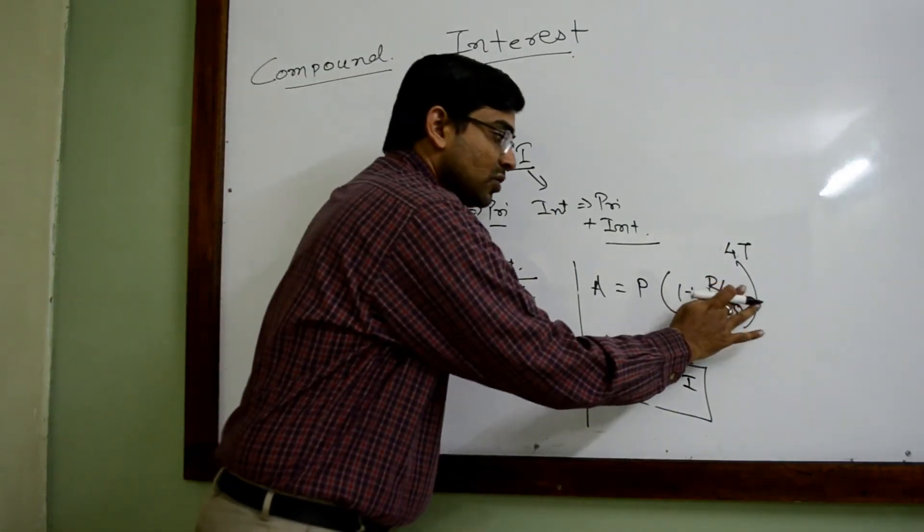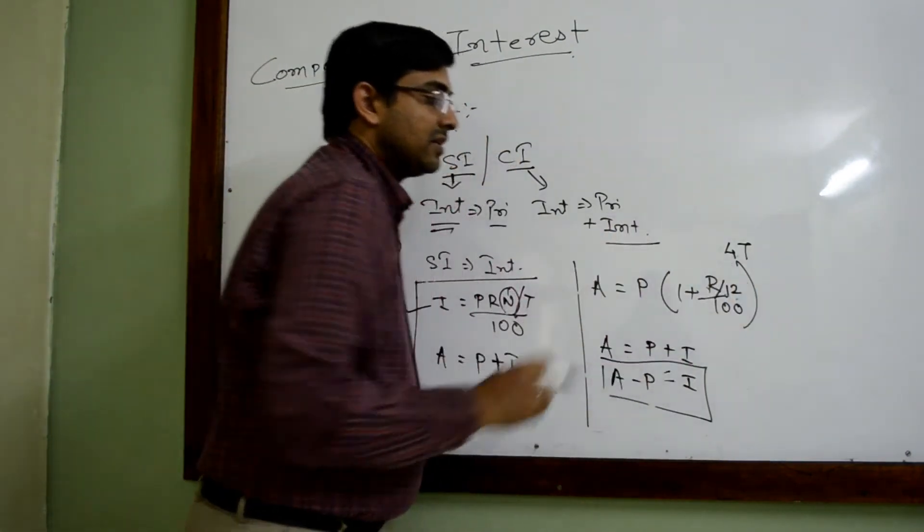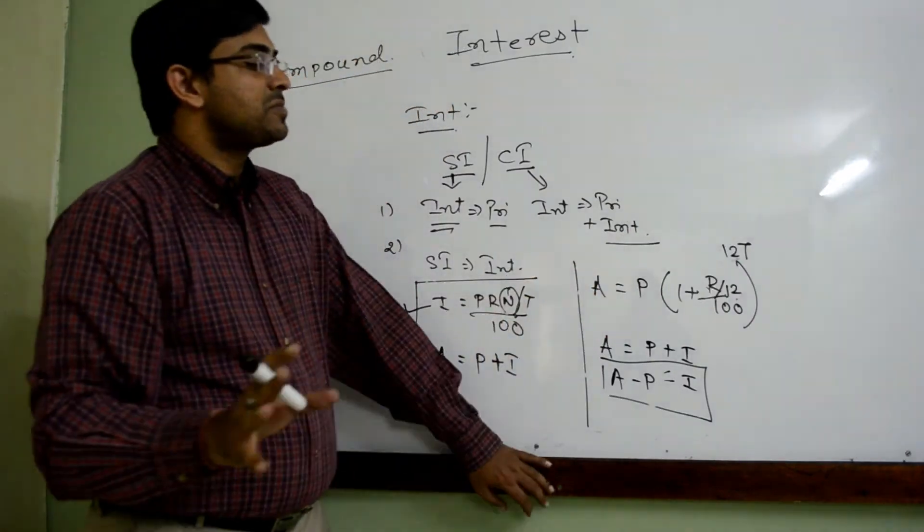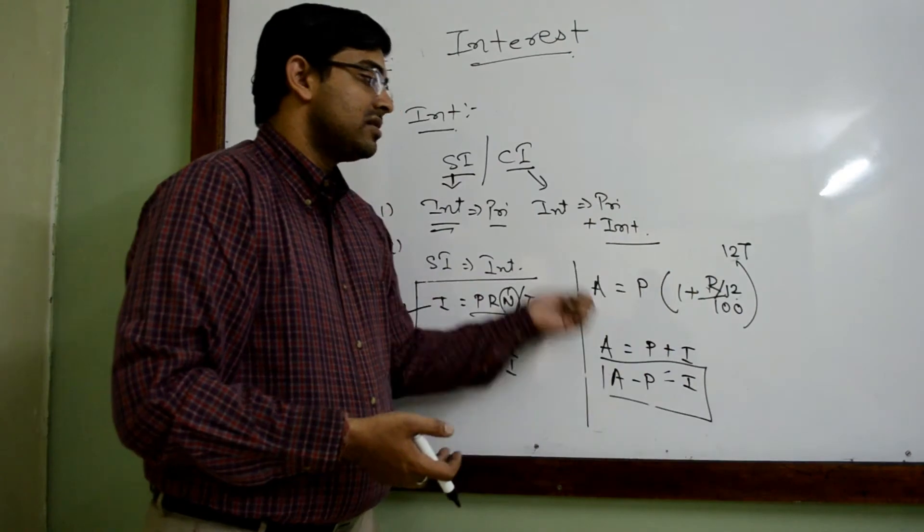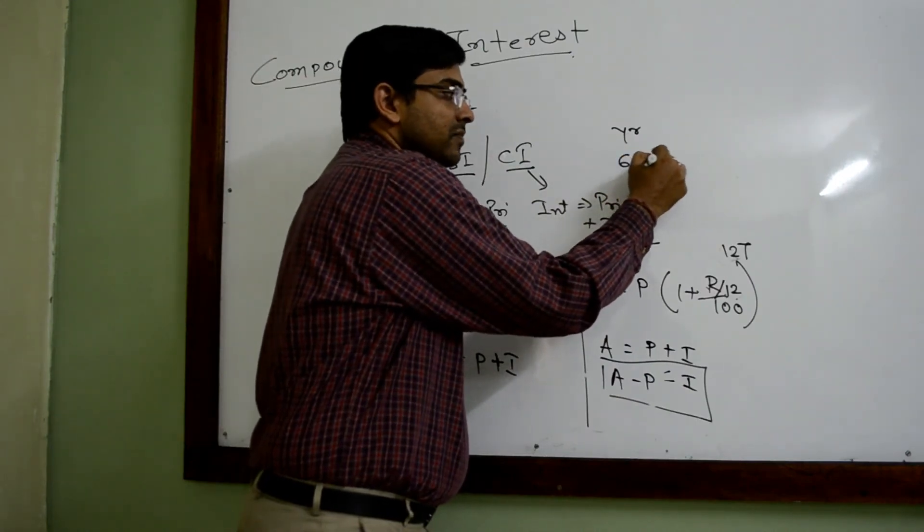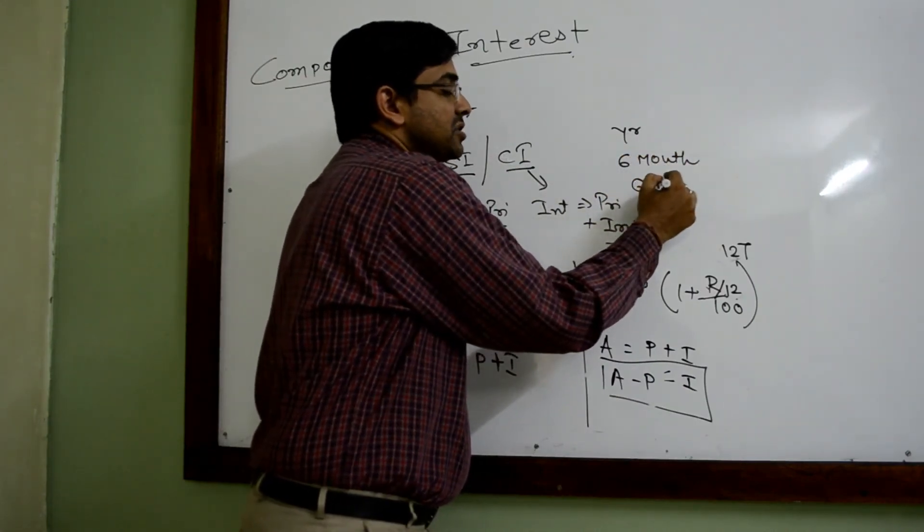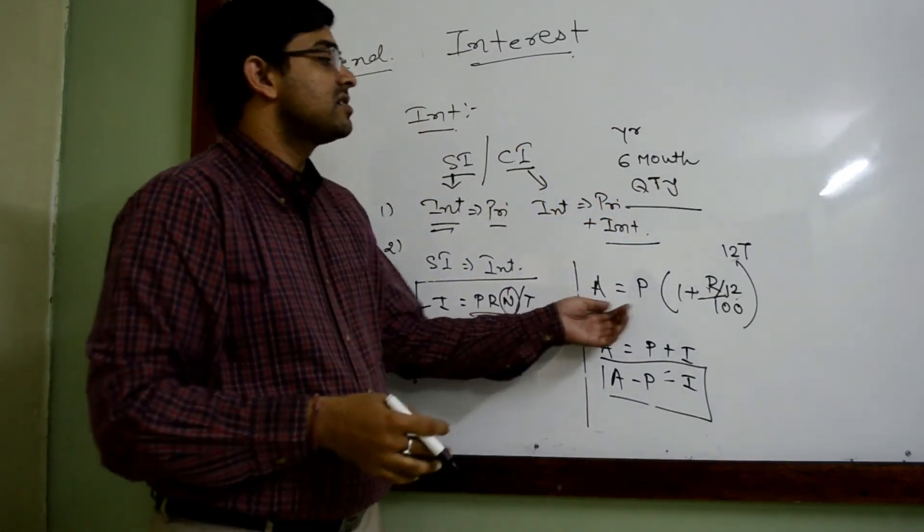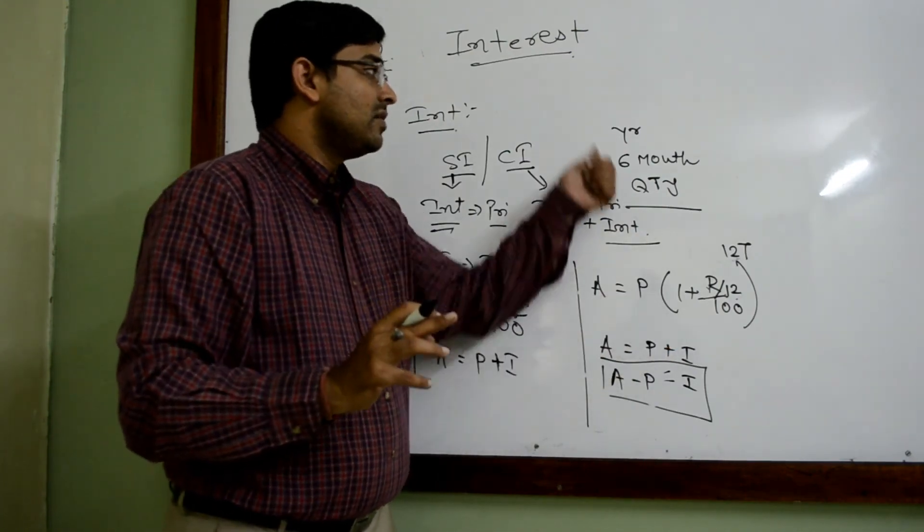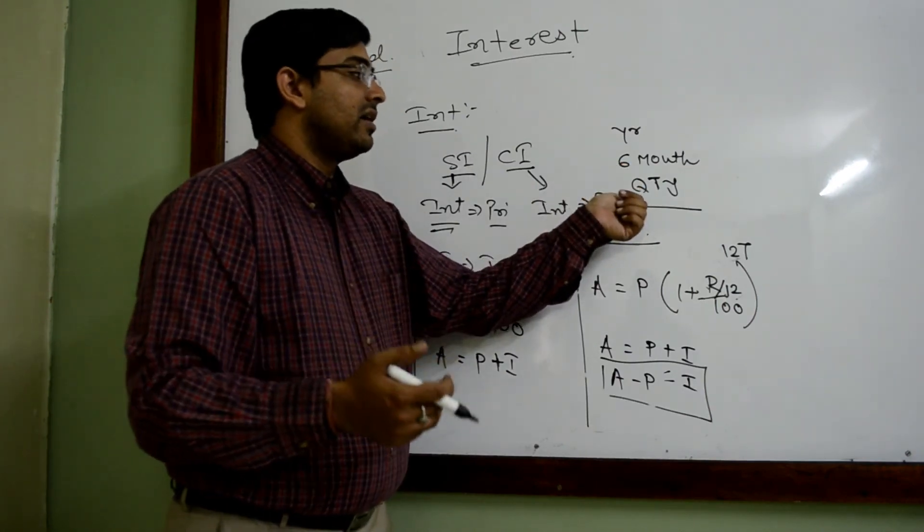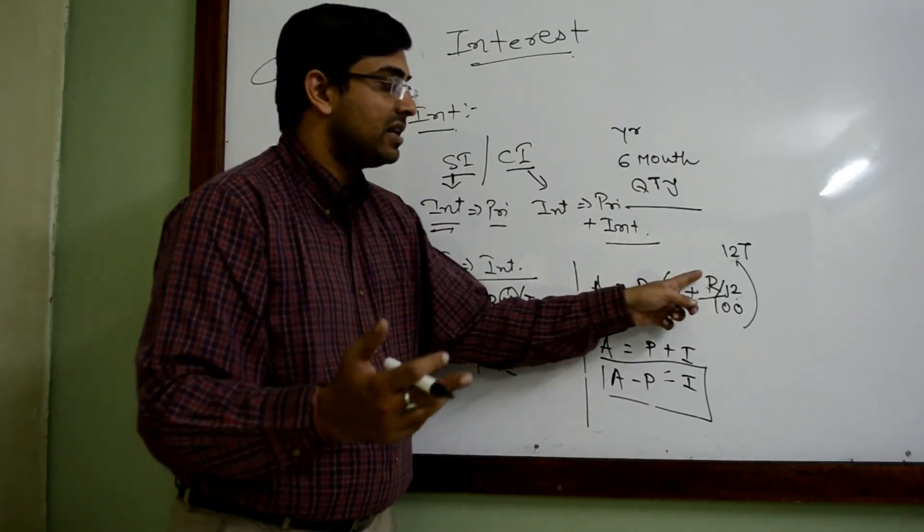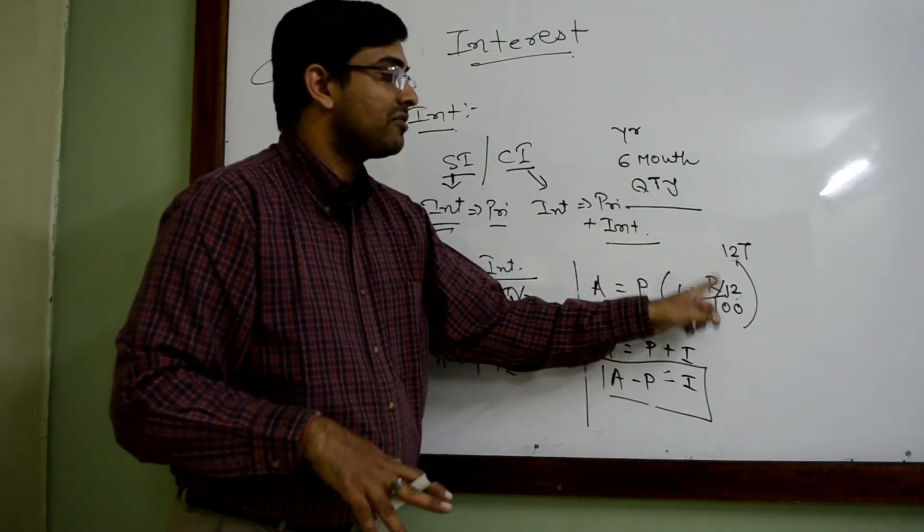If it's monthly, how many months would be there? 12. So it will be R by 12, and this will become 12T. Normally from exam perspective this happens, as calculators are not available and this calculation becomes complicated. At most yearly, six monthly, or quarterly questions are asked. Monthly, in most cases you won't get exam questions. So the questions that come are year, half year, and quarter. You don't have to memorize much. This is the formula modified: for half year it's R by 2 and 2T; for quarter it's R by 4 and 4T.